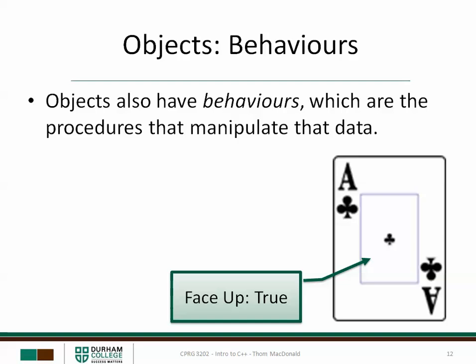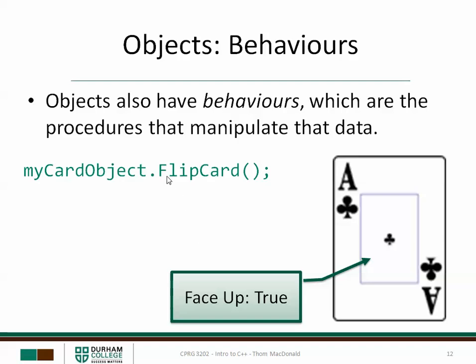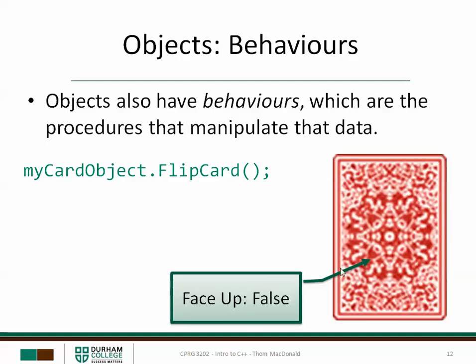Objects also have behaviors. Behaviors are those procedures that manipulate the data or change the state of the object — or maybe just find out what the state of the object is. For example, our playing card right now has a FaceUp state of True. If I had a behavior defined called FlipCard, what this line of code might do is change the state of this object so that FaceUp is False. That's an example of a behavior.